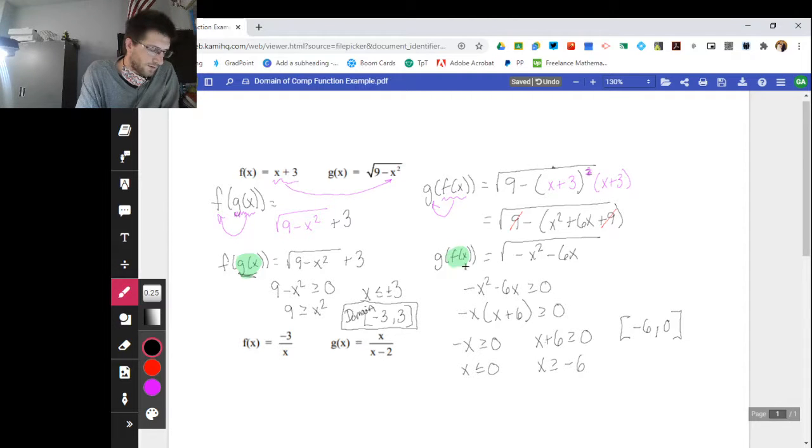And if I look at the original inside function, f of x, well, f of x is x plus three. x plus three is a linear function. Linear functions don't have any restrictions. They're all real numbers. So that doesn't give me anything to worry about. So I can just worry about the restrictions placed in the composite. So my overall domain is going to be this negative six to zero inclusive.